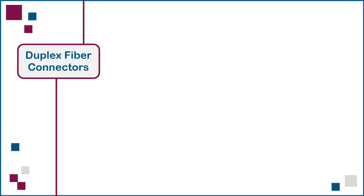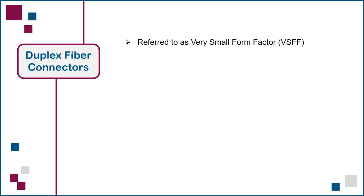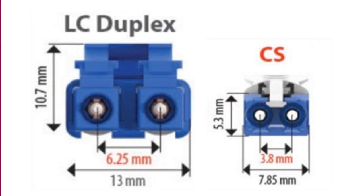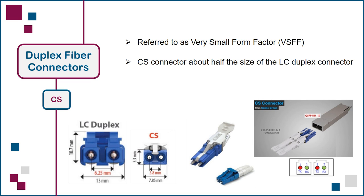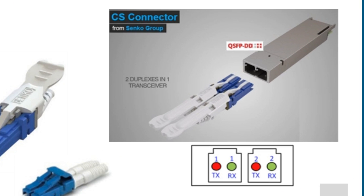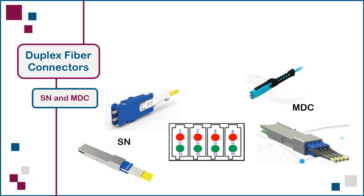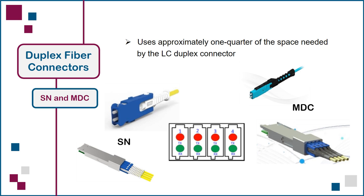Three new duplex connectors have been introduced as the next generation, referred to as very small form factor, or VSFF connectors, to differentiate them from the small form factor LC. The CS connector takes up approximately half the space of the LC duplex, making it possible to insert two duplex CS connectors, or four fiber strands, into a patch panel adapter or optical transceiver that is the same size as a two fiber strand LC duplex transceiver, as shown here. The SN and MDC connectors are even smaller, taking up approximately one quarter of the space needed by the LC duplex, making it possible to insert four duplex SN or MDC connectors, or eight fiber strands, into a patch panel adapter or optical transceiver that is the same size as an LC duplex transceiver, as shown here.